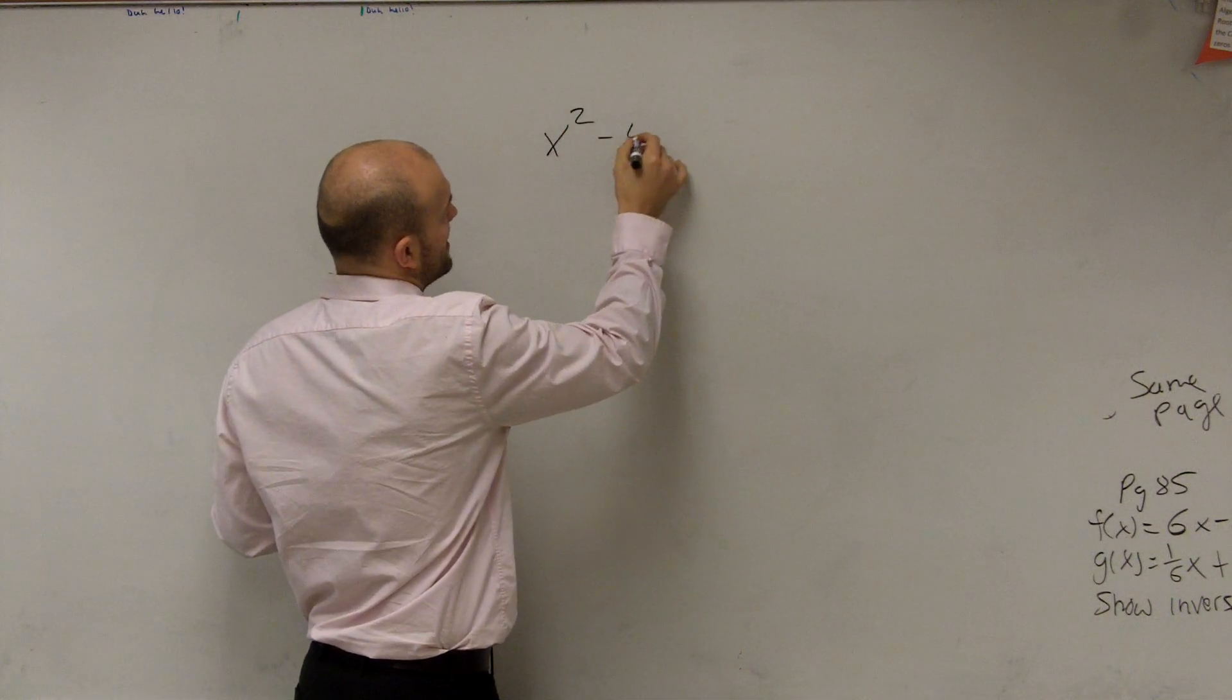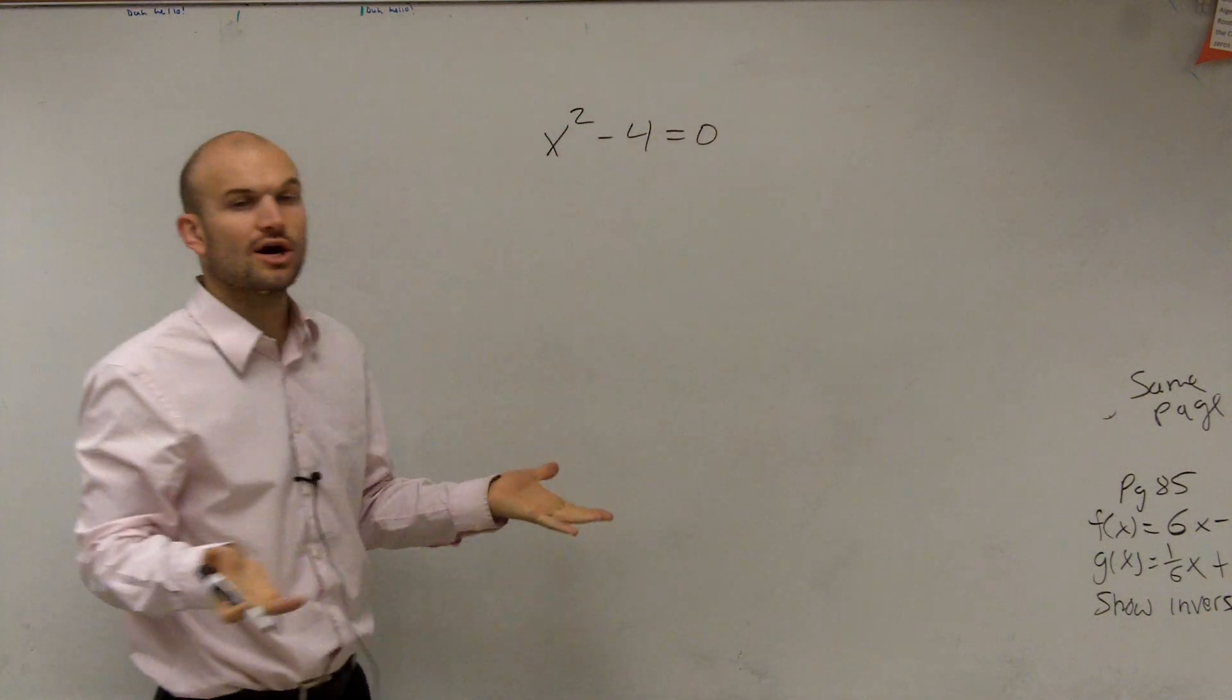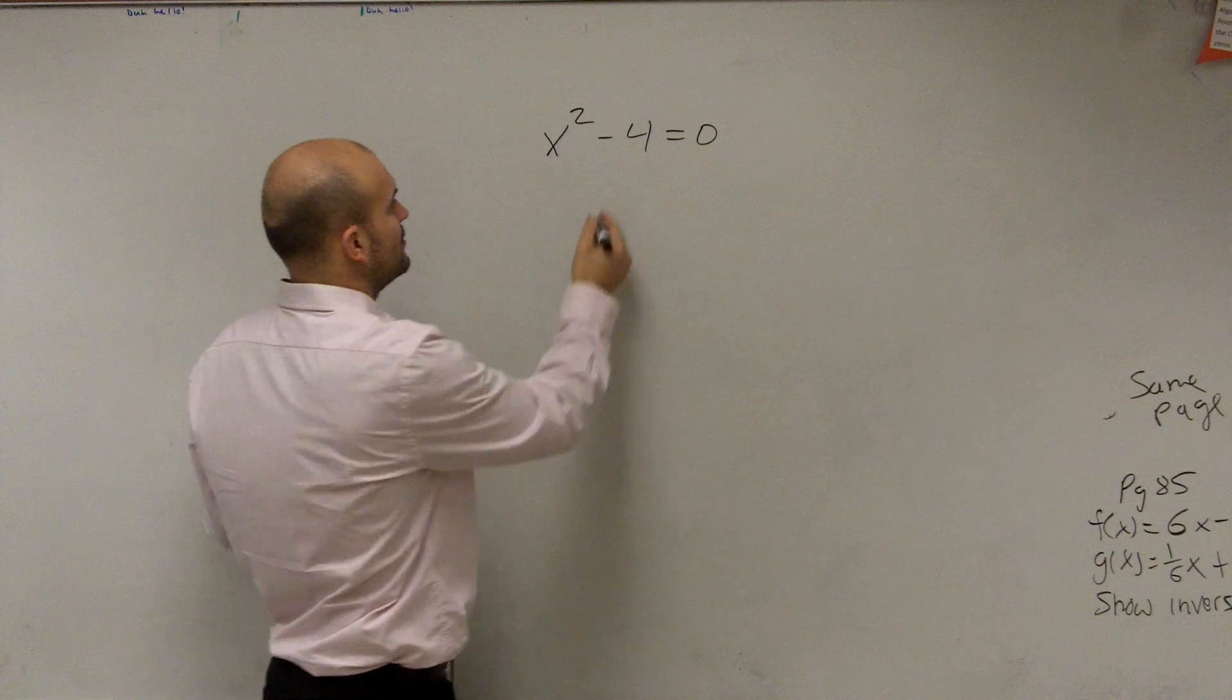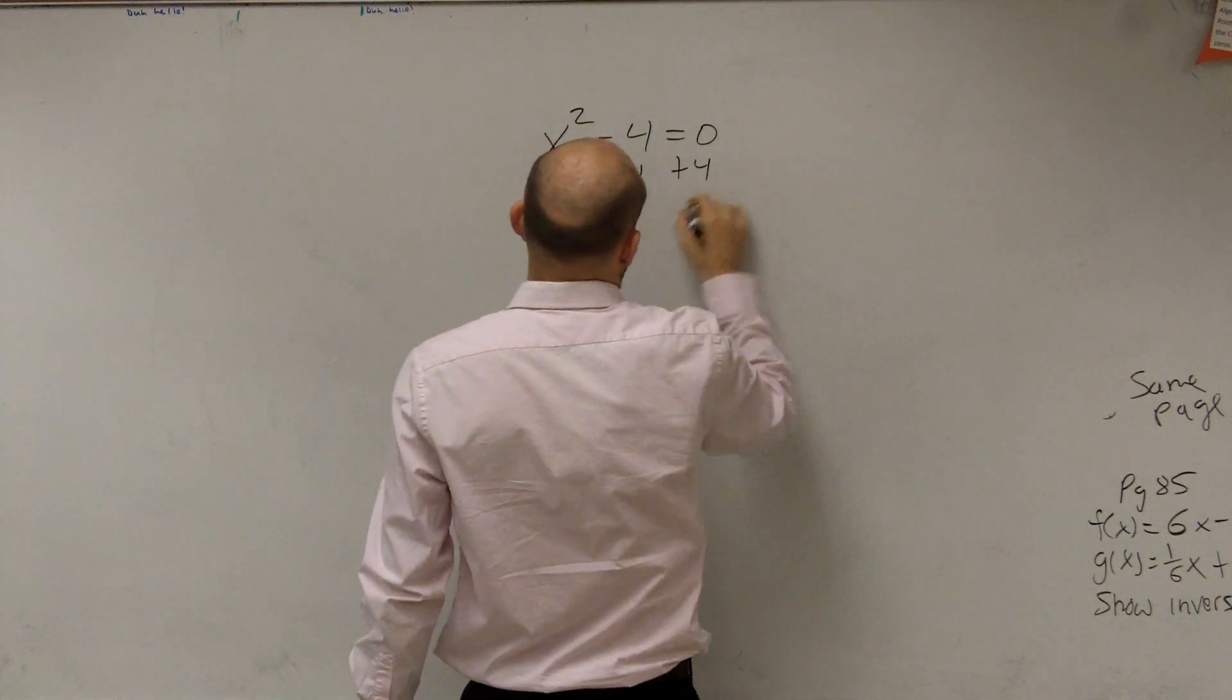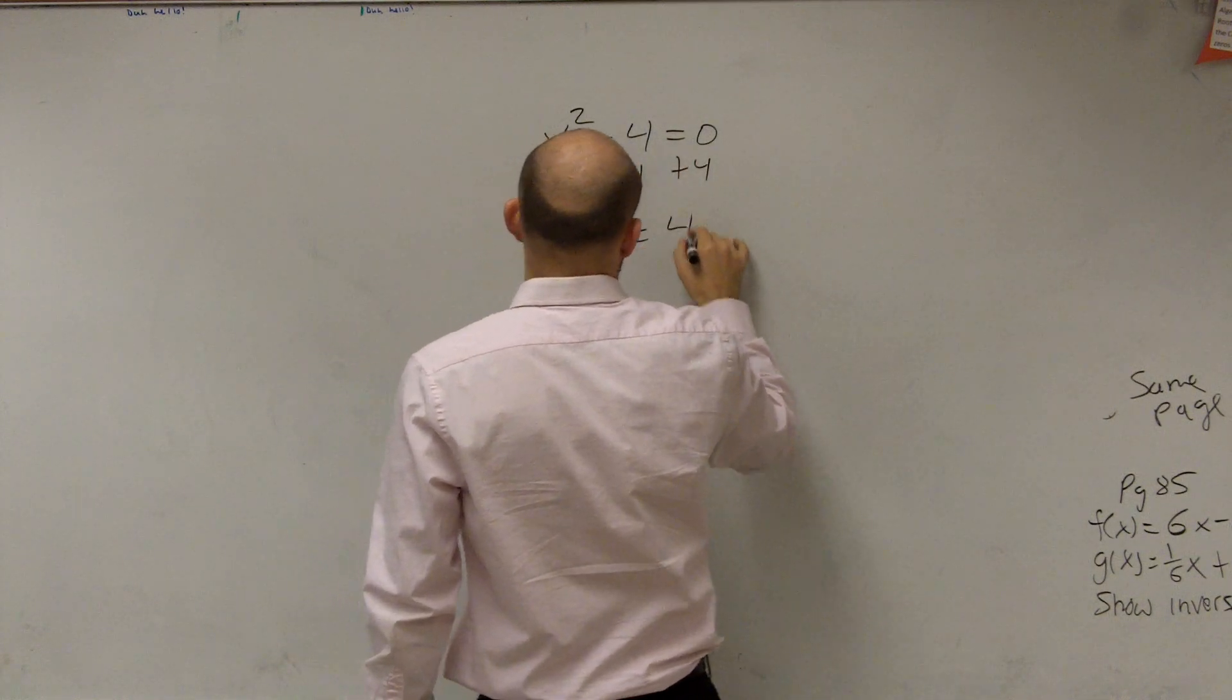If we have x squared minus 4 equals 0, and I say solve, you add the 4 to the other side. And then you get x squared equals 4.